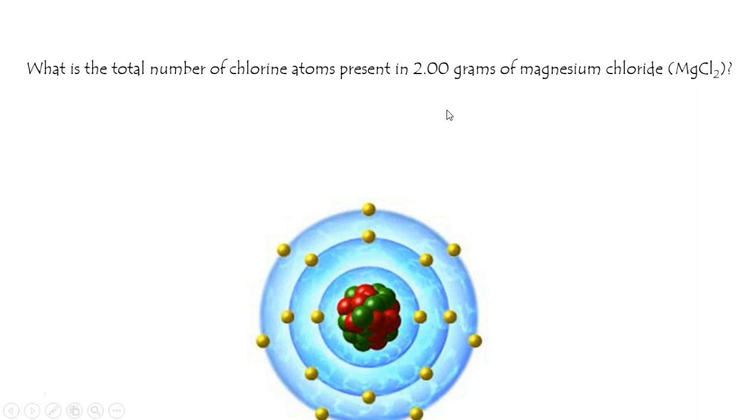We're going to go from grams of magnesium chloride to moles of magnesium chloride using its molecular weight. Then we'll go from moles of magnesium chloride to moles of chlorine, because there are two chlorine atoms for every magnesium chloride molecule. And then finally, we'll take advantage of Avogadro's number, which is how many a mole is, to convert that into the total number of chlorine atoms.